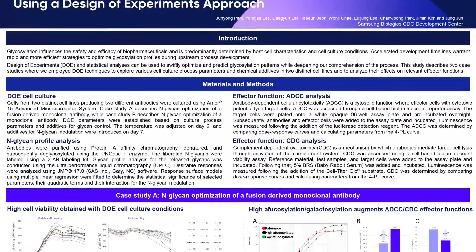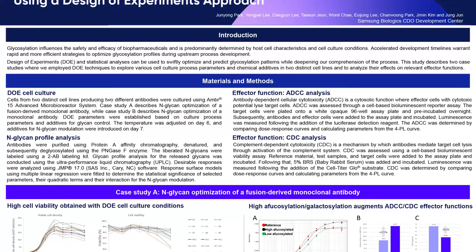DOE parameters were established based on culture process and additives for glycan control. The temperature was adjusted on day six, and additives for n-glycan modulation were introduced on day seven. Antibodies were purified using protein A affinity chromatography, denatured, and subsequently deglycosylated using the PNGase F enzyme.